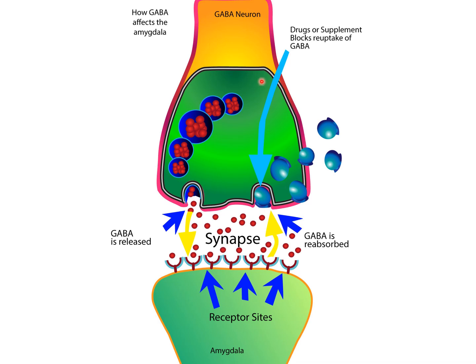GABA is inhibitory. So when these GABA molecules are released into the synapse and bind to the postsynaptic GABA receptors on the amygdala, GABA actually inhibits the amygdala and slows down its hyperactivity.